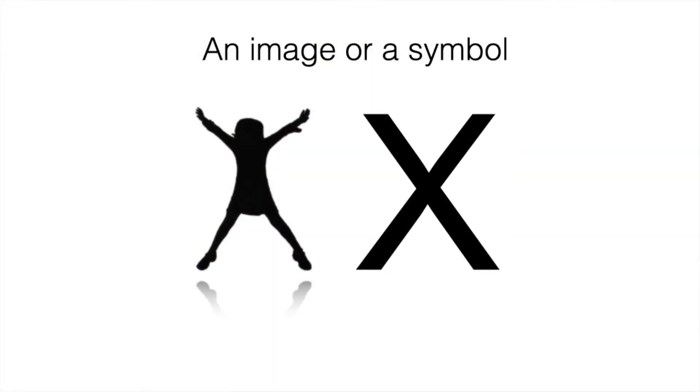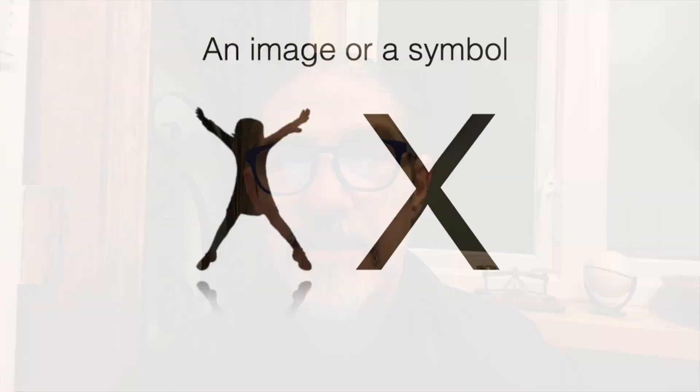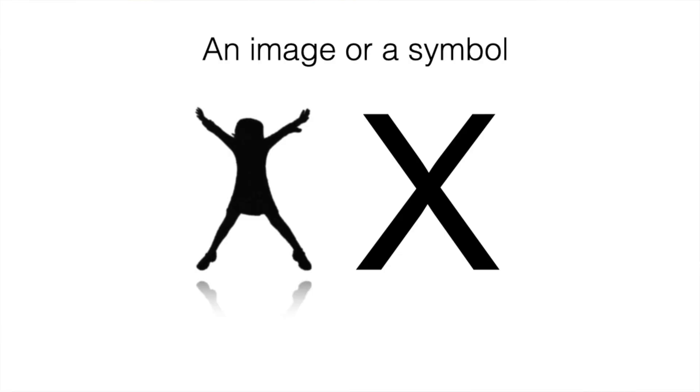What about this one? What does that one mean? Is it an X? Yeah, that would be right. Is it a cross? Yes, that would be right too. Does it mean no entry? It could mean that. Does it mean wrong? It could mean that. Does it mean a kiss? Yeah, it could mean that. So a symbol can mean a lot of different things, and that's one of the problems with a symbol.